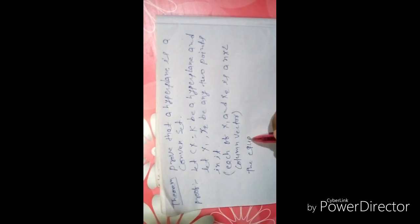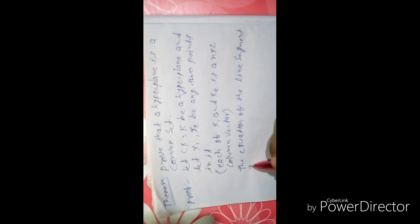The equation of the line segment joining the points x1 and x2 is given by x = lambda x1 + (1 - lambda)x2. We want to show that C[lambda x1 + (1 - lambda)x2] = K.